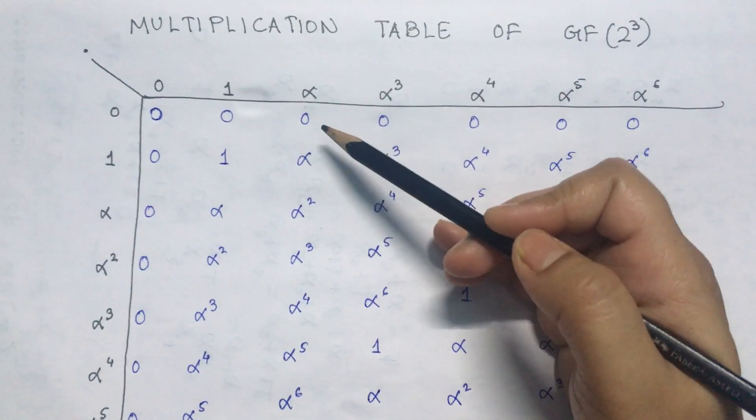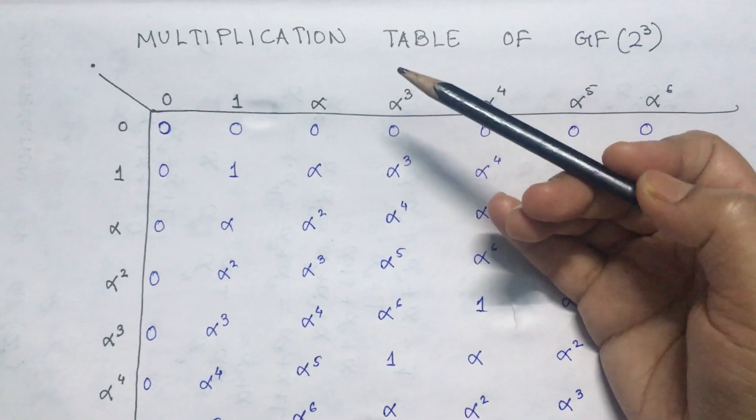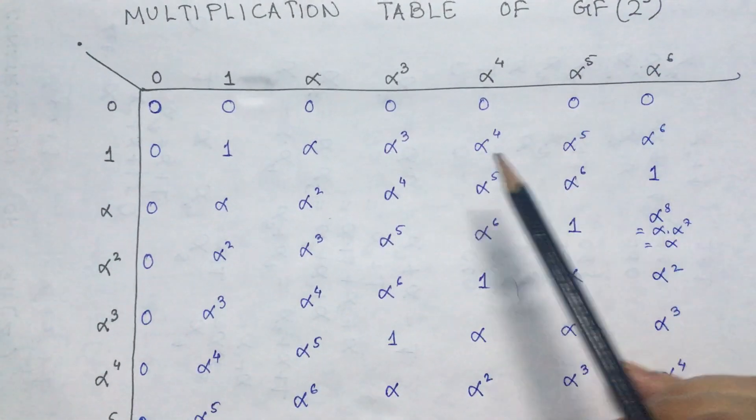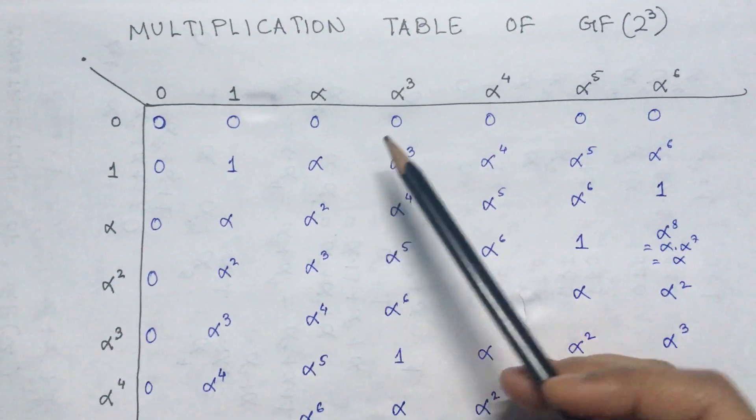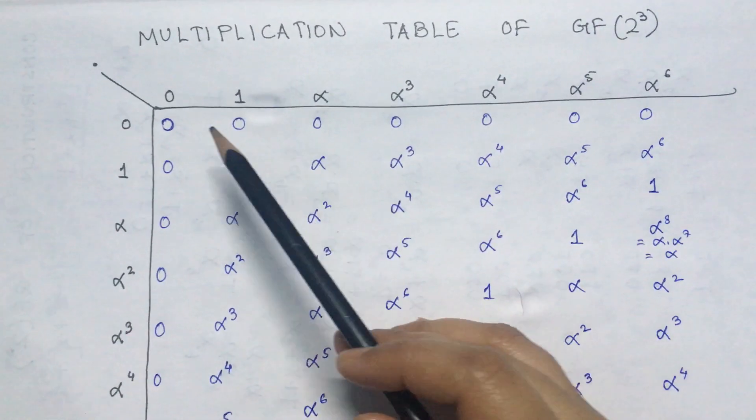One thing to be noted over here is, irrespective of what polynomial we are using to construct the GF2 to the power 3, the multiplication table remains the same. And over here also we do not require the polynomial representation of these field elements. So, now let us see.